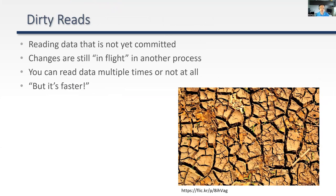The first is a dirty read: reading data that has not yet been committed. You're seeing changes still in flight from a different process. This can lead to reading data multiple times or not at all. The common argument for dirty reads — or read uncommitted, also known as NOLOCK in SQL Server — is that it's faster. But I'd be more concerned with incorrect results. It's always easy to provide an incorrect result quickly: any question, the answer is 42. You got it fast, but it's wrong.